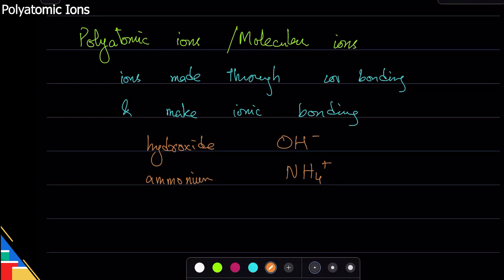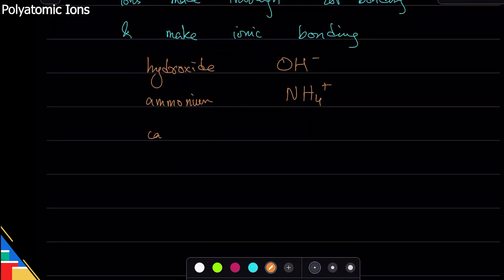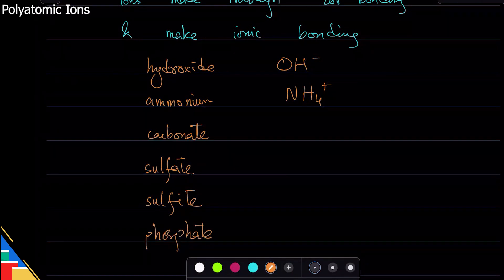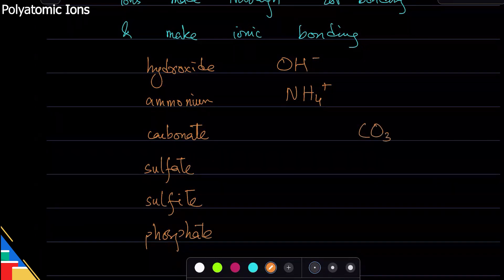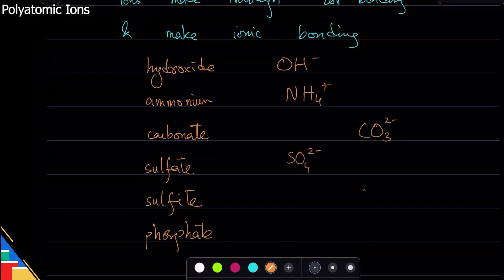Then carbonate, sulfate, sulfite, and phosphate. There are others as well that you will see, but you should know these. So carbonate is CO3 negative two, sulfate is this, then sulfite and phosphate. You need to remember the name, the formula, and the charge.